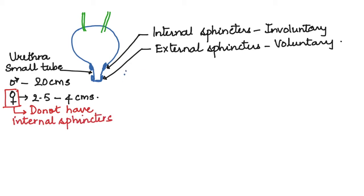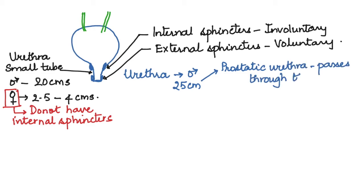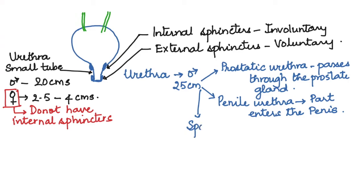Females do not have internal sphincters. The urethra in males is about 20 to 25 centimeters and is divided into three parts. The first part is the prostatic urethra which passes through the prostate gland. That enters into the penis, so that part is called the penile urethra. The third part is the spongy urethra which passes through the entire length of the penis.